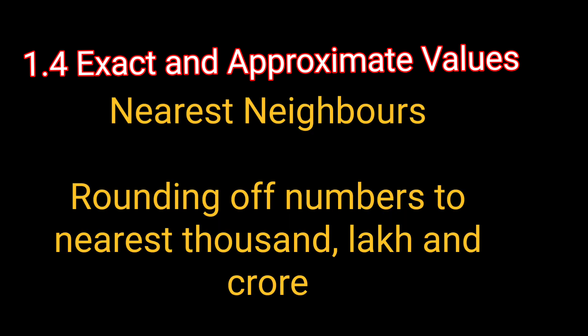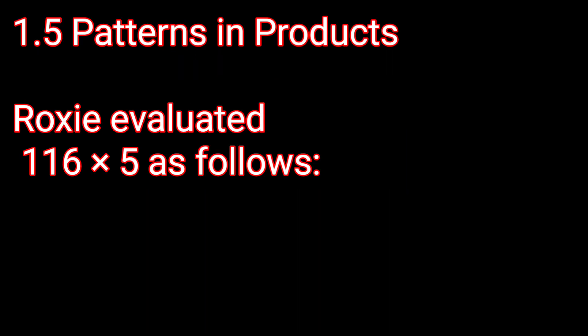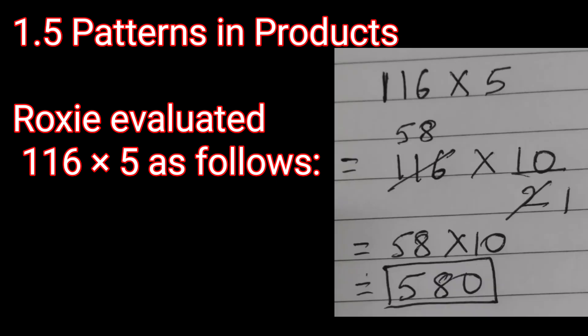In section 1.5, patterns in products, Roxy and Estu play with multiplication and find an interesting technique for multiplying a number by 10, 100, and 1000. For example, 116 × 5: since 5 can be written as 10 ÷ 2, this becomes 116 × 10 ÷ 2. After cancellation, that gives 58 × 10 = 580. Using this method, you can find quick ways to calculate products.